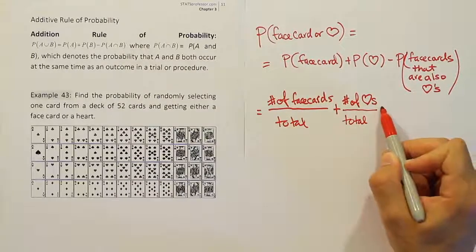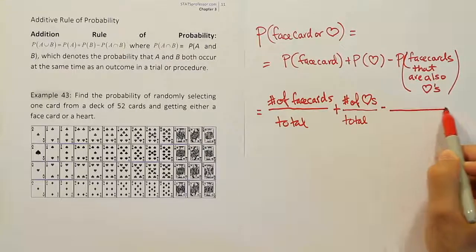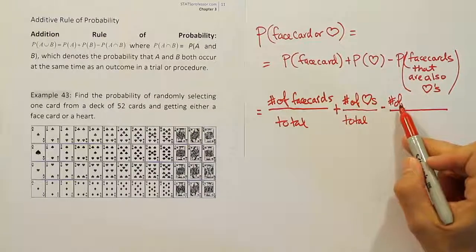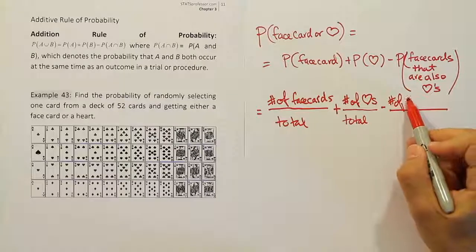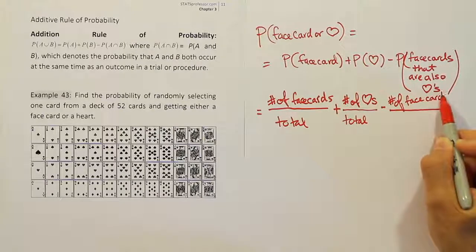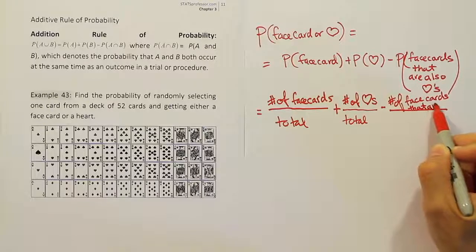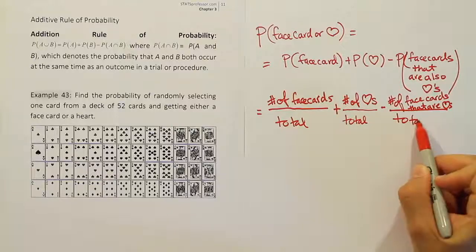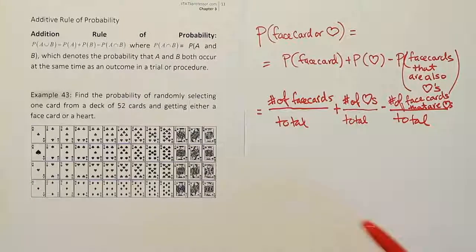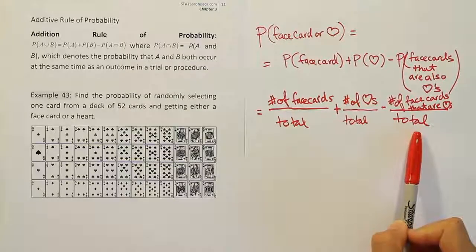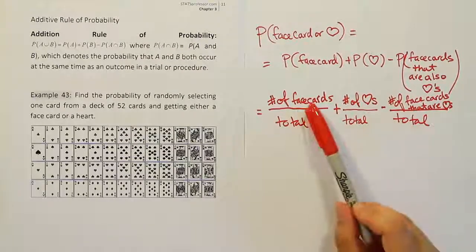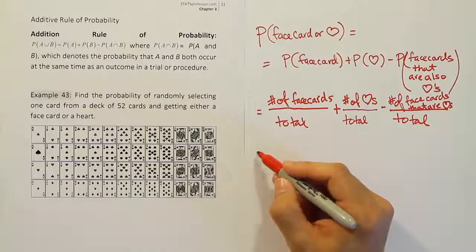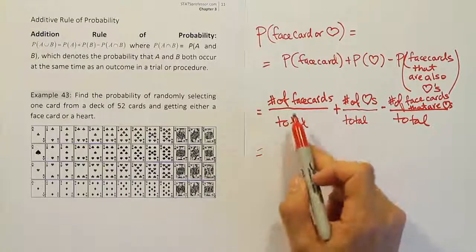Divided by, again, the total. And then we're going to subtract off this fraction, which remember is going to be number of face cards that are also hearts. Face cards that are hearts, over the total. So those are the fractions written out in words. We like to write it out in words first because that's where all the thinking occurs. When you explain this in words, you're actually doing the thinking that's necessary to fill in the formula properly. And then from there, the rest is easy. It's just counting up the things that meet these requirements.